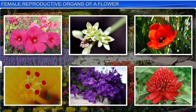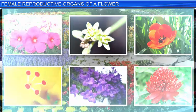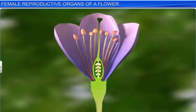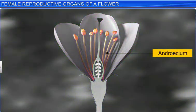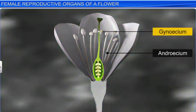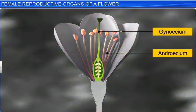Flowers are one of the most fascinating sights to behold. Incidentally, flowers also happen to be the site of sexual reproduction, as they contain the androecium and gynoecium — the male and female reproductive organs of a plant.